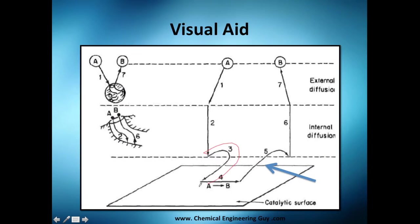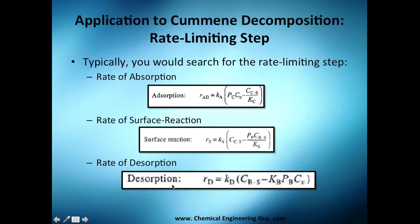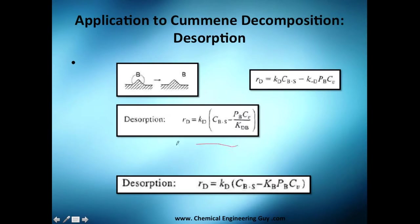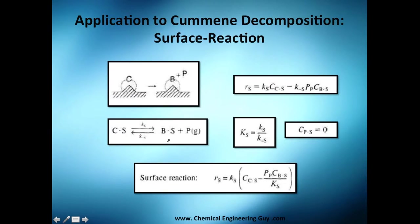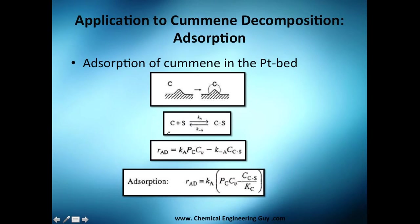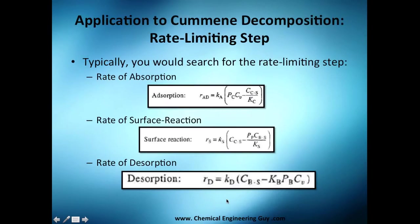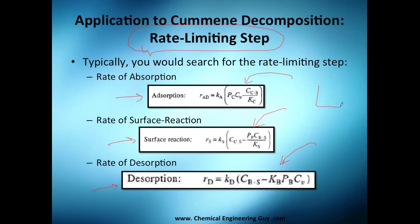We've now analyzed step 3, step 4, and step 5 — the kinetic or adsorption-dependent steps. Now, what would you actually do with these equations? You'll probably be asked which step is the rate-limiting one. You will need to choose one, analyze the numbers, input data, graph results, or make assumptions — for example, saying the partial pressure of one component is extremely low, approximately zero.